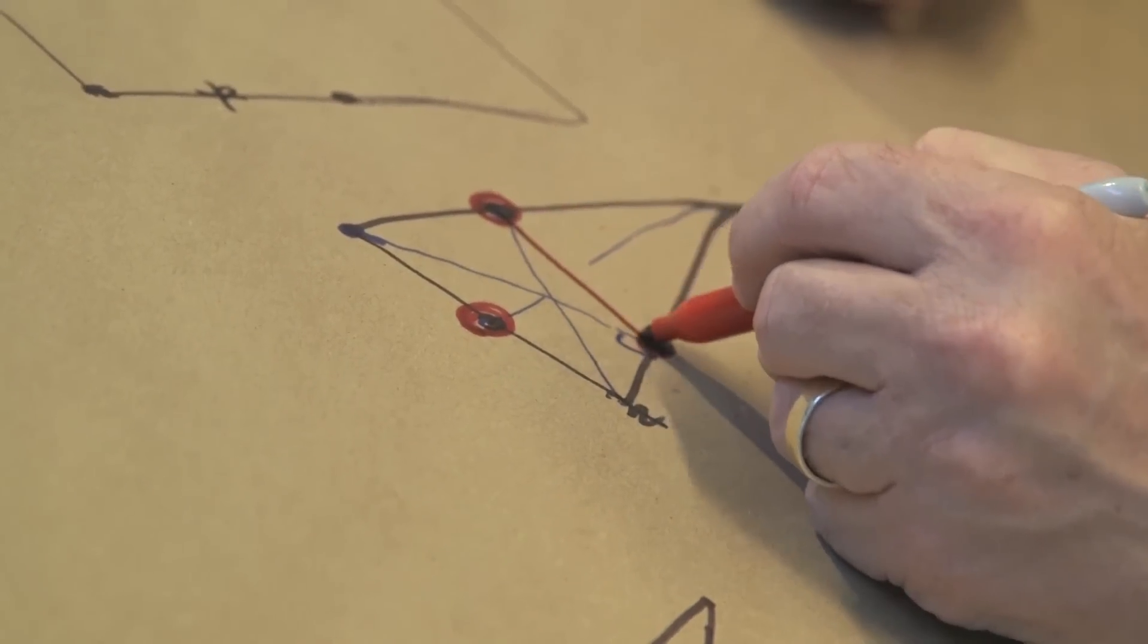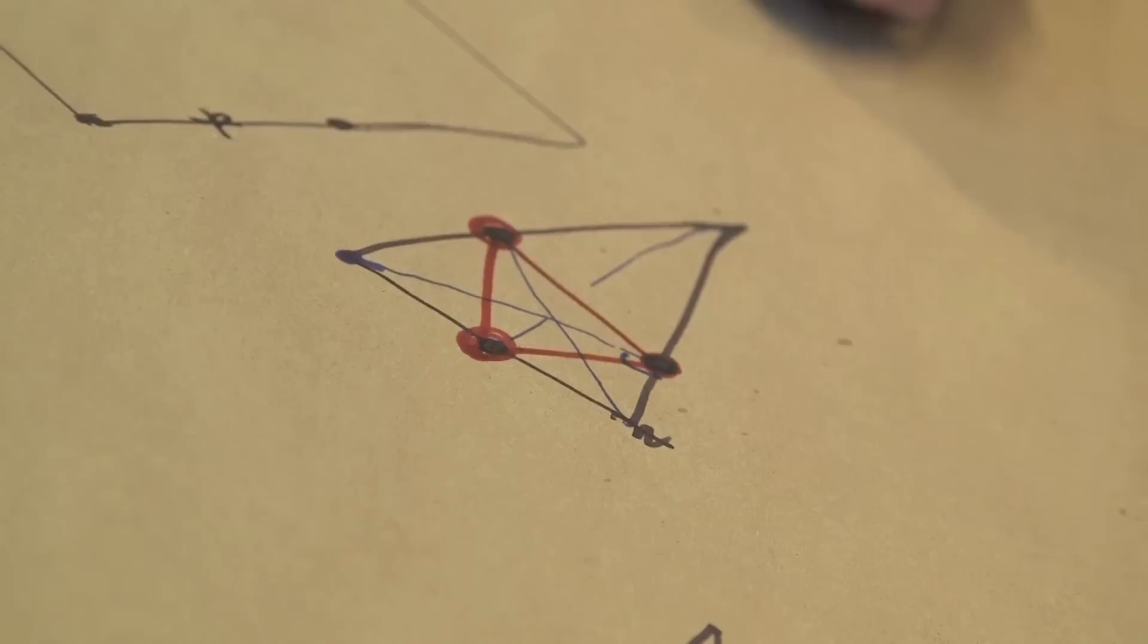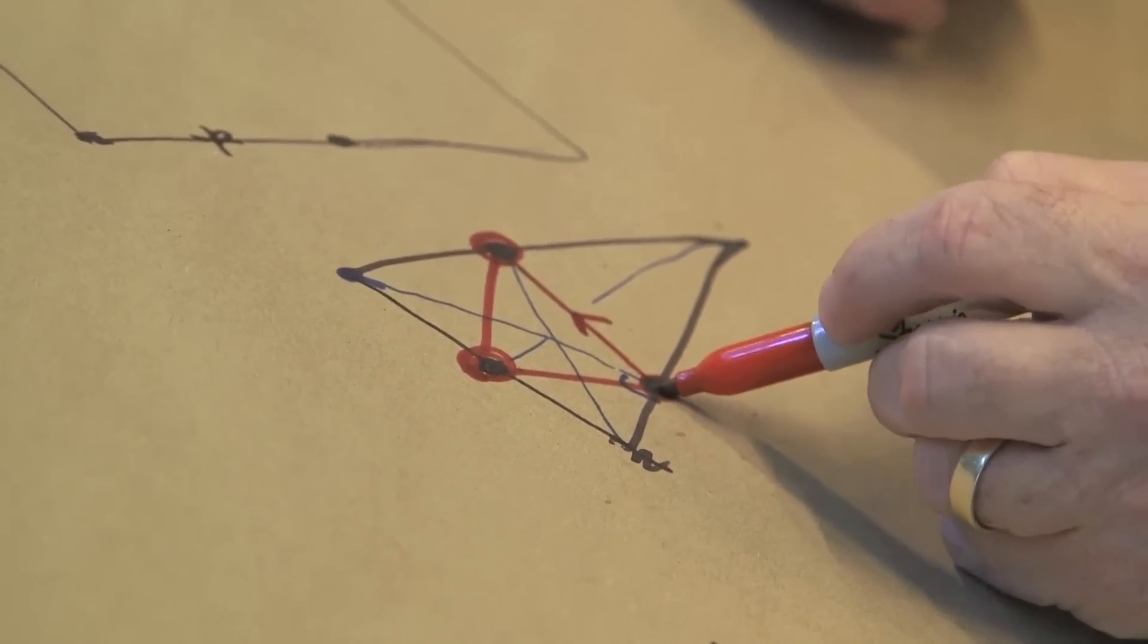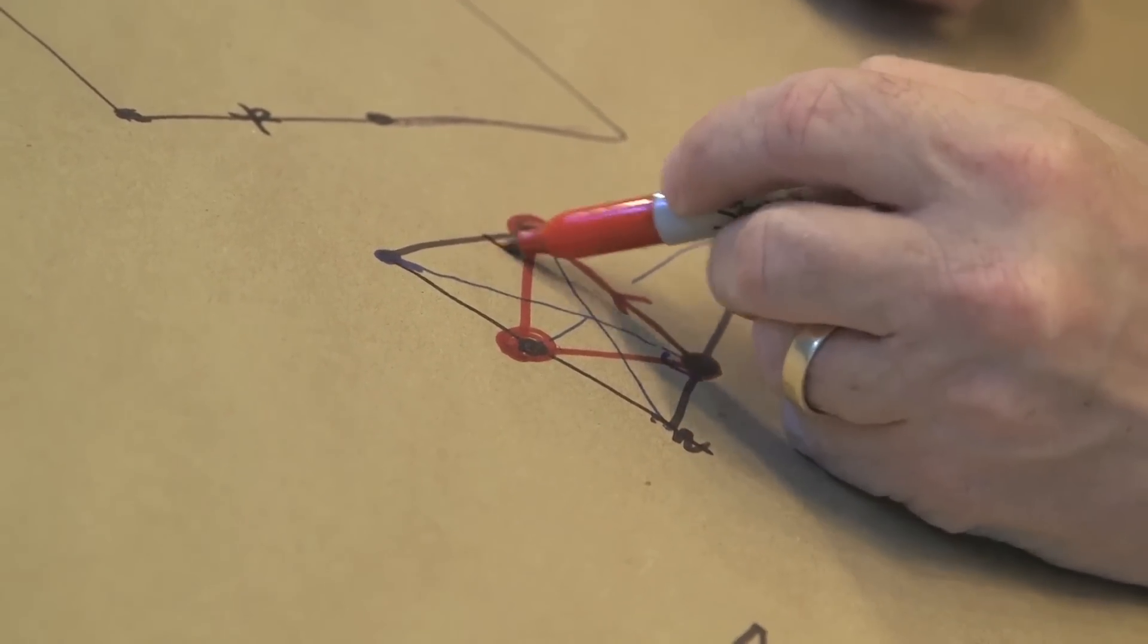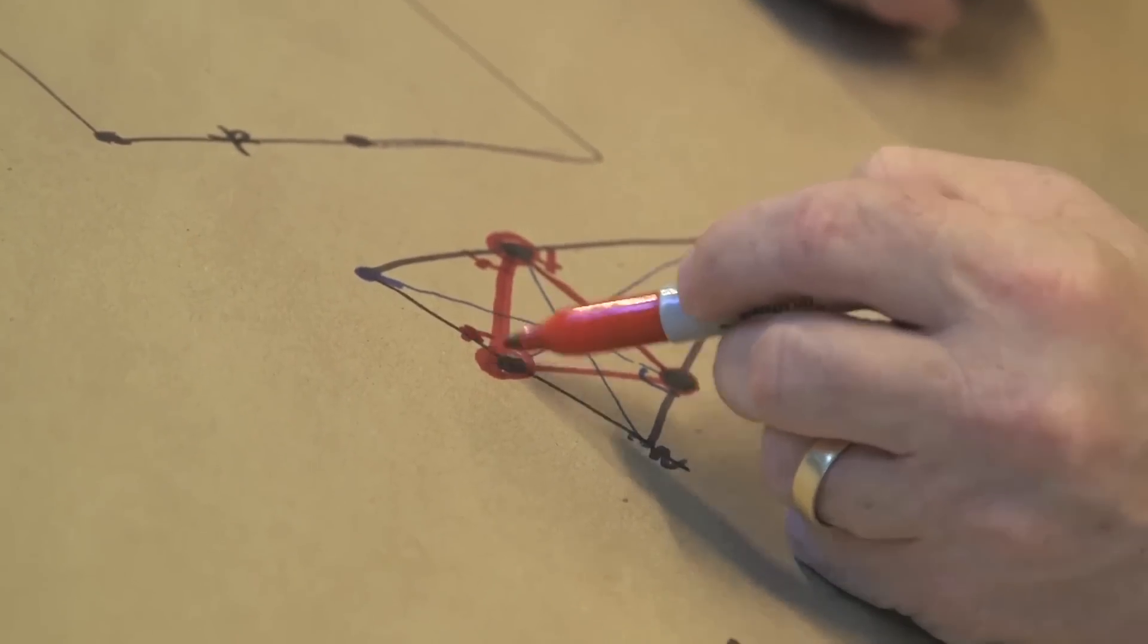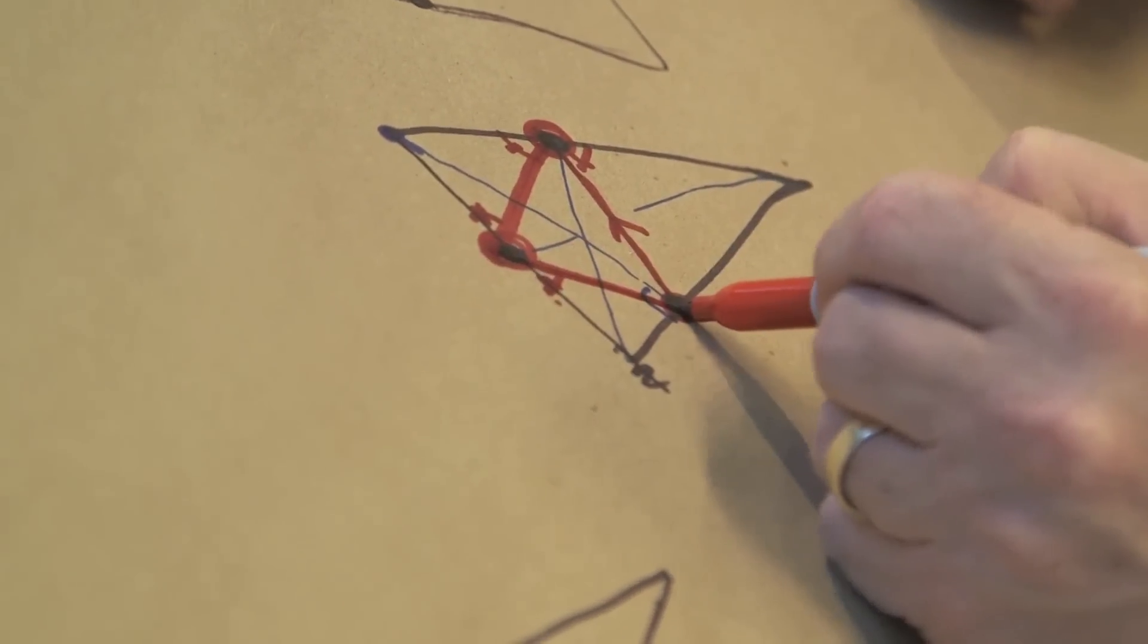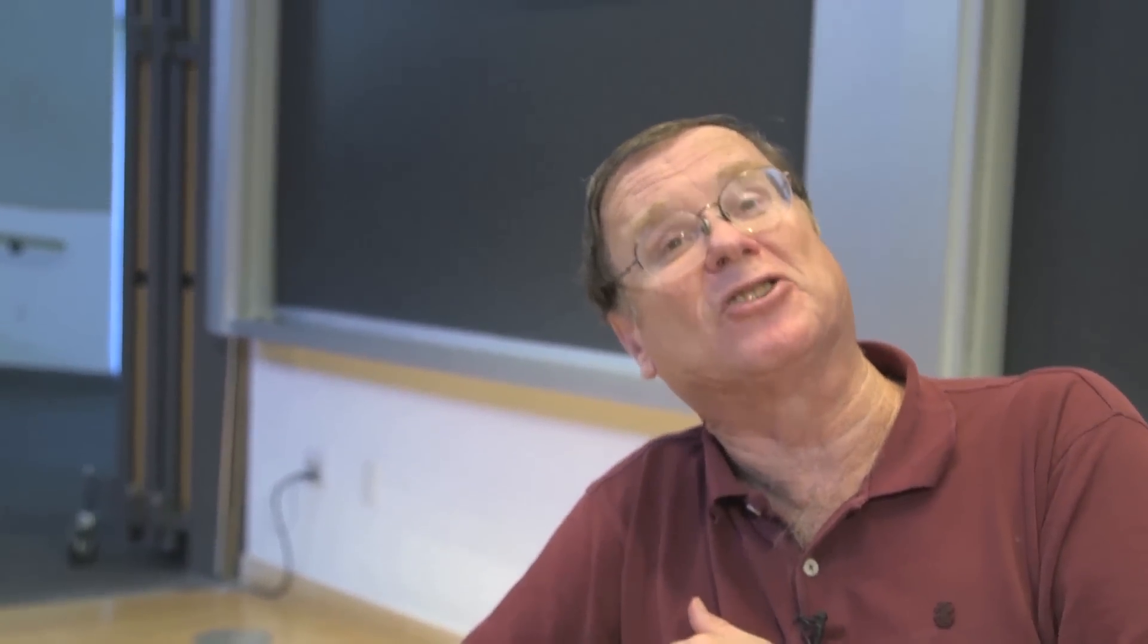This triangle joining those points gives a periodic orbit, meaning if I start here, I go a line towards here, this angle will equal that angle, and I'll bounce like that, and then I'll get to this point, and this angle will equal this angle, and I'll bounce like that, and I come back, this angle equal this angle, and I'll repeat myself. This example has been known for hundreds of years.